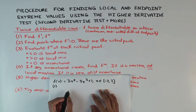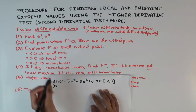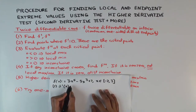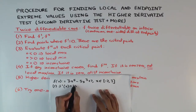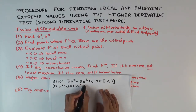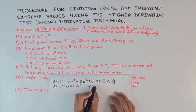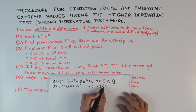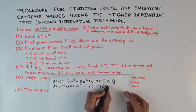The first step is to take the first derivative. The first derivative is 15x⁴ minus 15x². Then the second derivative is 60x³ minus 30x.